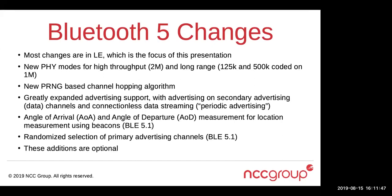There is also a new feature called periodic advertising, which allows streaming data to a number of recipients without having to establish a connection. In Bluetooth 5.1, which just came out this year, the most notable addition is angle of arrival and angle of departure — these look at phase differences between received messages on an array of antennas, or use an array of transmitting antennas, to compute the direction from which data came. This can be used to improve indoor location, though the security impacts are fairly low.